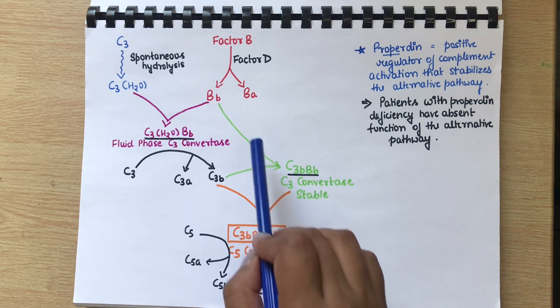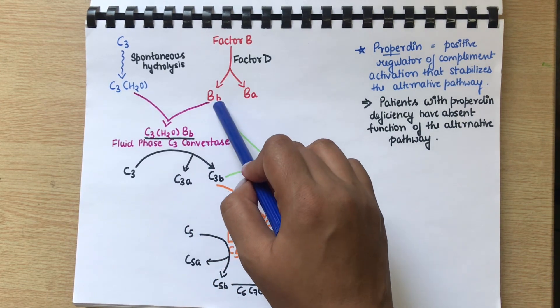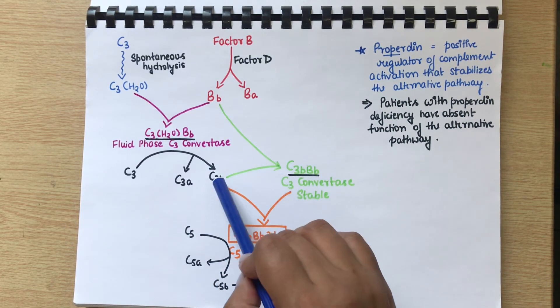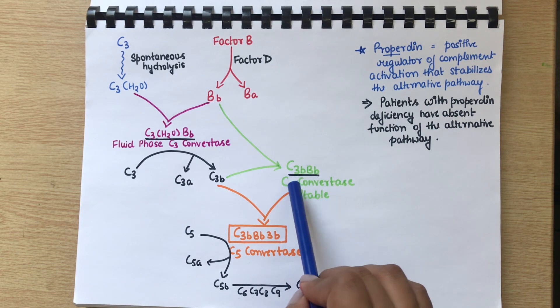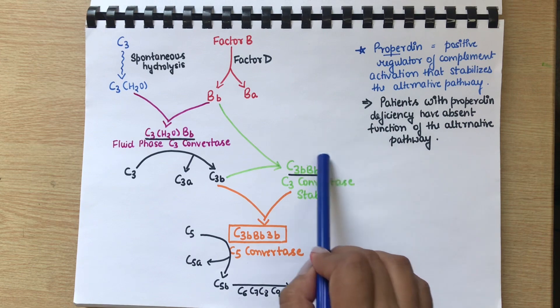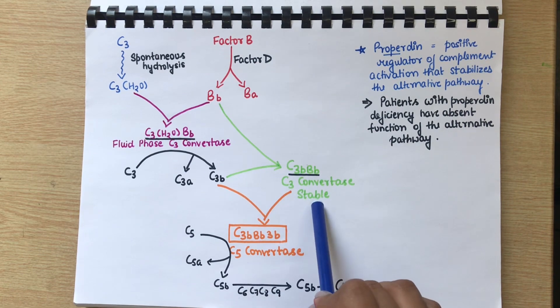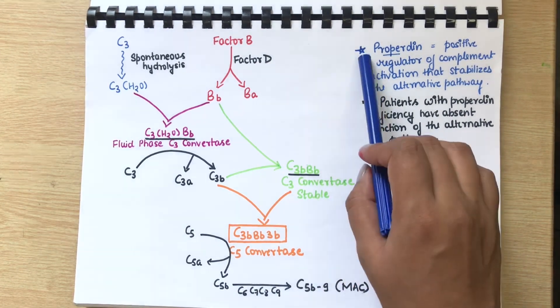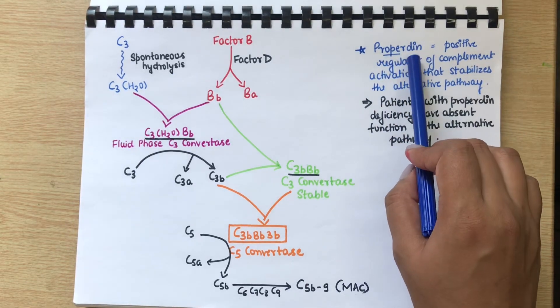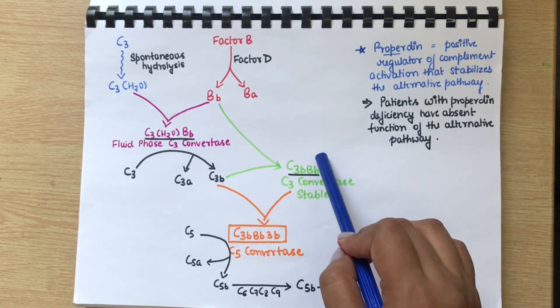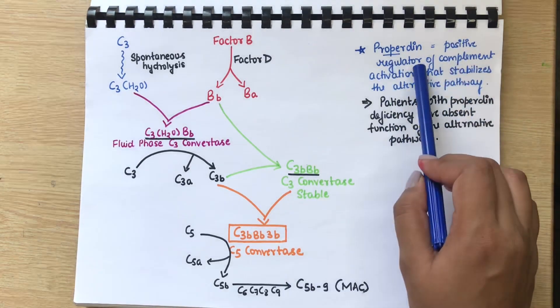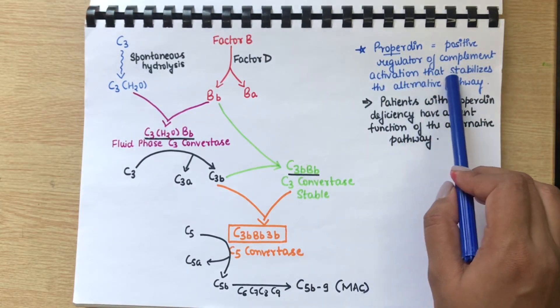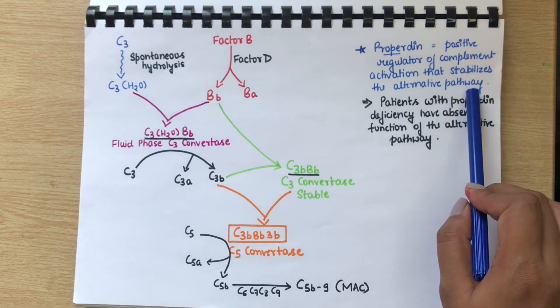Now this C3b, being the active part, will combine with the activated part of Factor B, which is Bb. They will form C3bBb, which is known as C3 convertase, but this is the stable C3 convertase. Here comes the role of properdin. Properdin plays a major role in stabilization of C3 convertase and C5 convertase. It is a positive regulator of complement activation that stabilizes the alternative pathway.